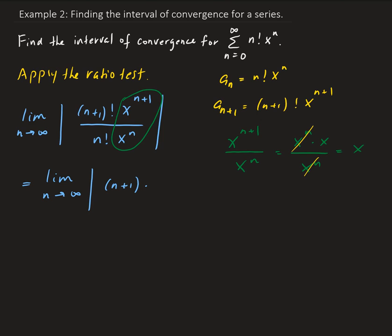This leaves us with x. Since x doesn't depend on n, we can factor out the absolute value of x, leaving us with the limit as n approaches infinity of (n+1). This limit, as n approaches infinity, is going to be infinity.